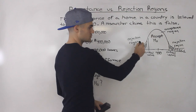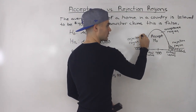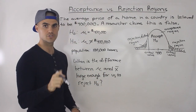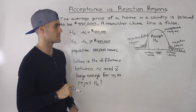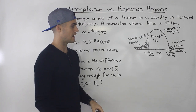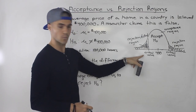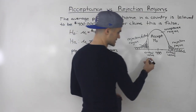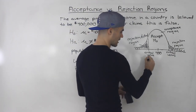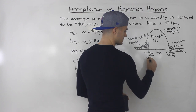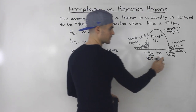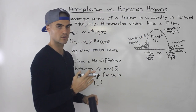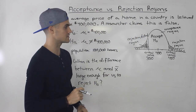The rejection region is sometimes also called the critical region — critical region and rejection region mean the same thing. Now, there are technical ways to calculate these critical values. For this example, let's say we calculate them and get 350 on the left and 450 on the right. Those are our critical values — let's assume that for this example.